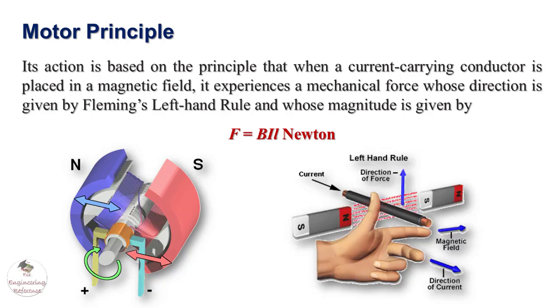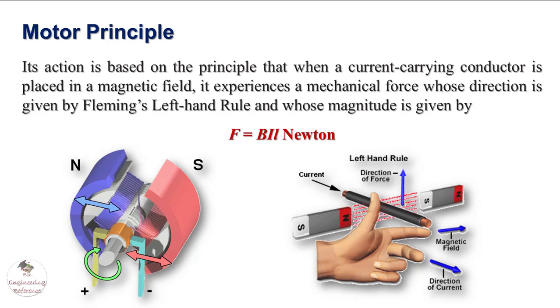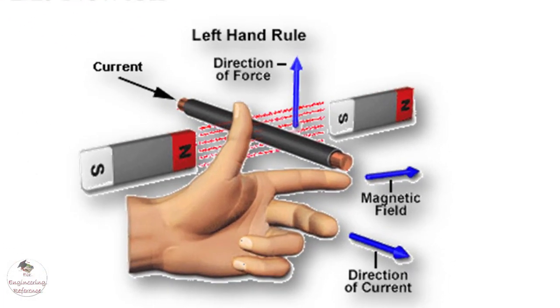By Fleming's left-hand rule, we understand a downward and upward force acting on the conductor. Fleming's left-hand rule states that if we stretch the thumb, middle finger and the index finger of the left hand in such a way that they make an angle of 90 degrees and the conductor placed in the magnetic field experiences magnetic force.